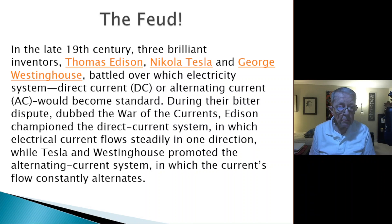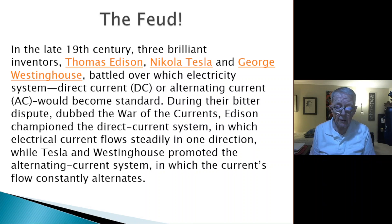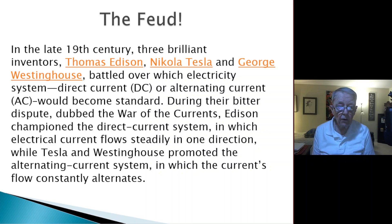During their bitter dispute dubbed the 'war of currents,' Edison championed the direct current system, in which electrical current flows steadily in one direction, while Tesla and Westinghouse promoted the alternating current system, in which the current flow constantly alternates back and forth.